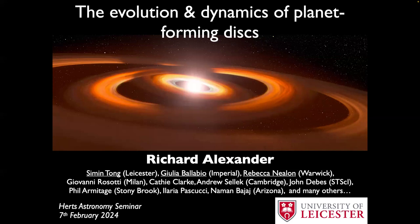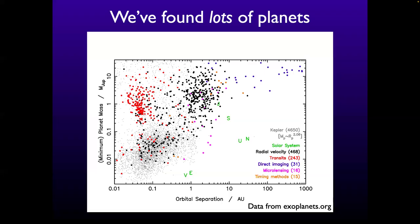To motivate this, I'm going to have a whistle-stop intro. The thing I'm sure you've all seen before is that exoplanets are everywhere. This is a plot showing orbital separation against mass of all the known exoplanet systems, with colour coding by detection method. The take-home message is basically that almost all stars we look at have planets, and most of the planets we see look nothing like anything in the solar system.